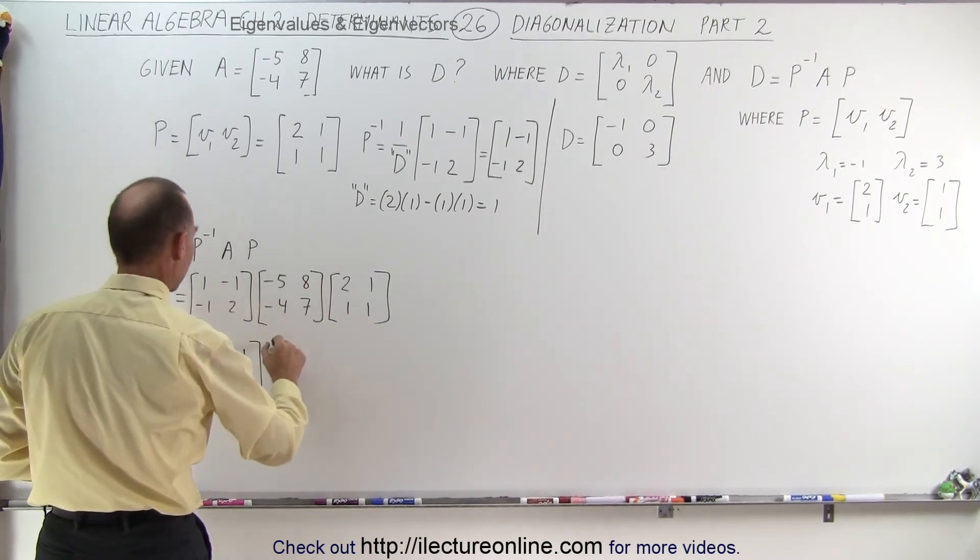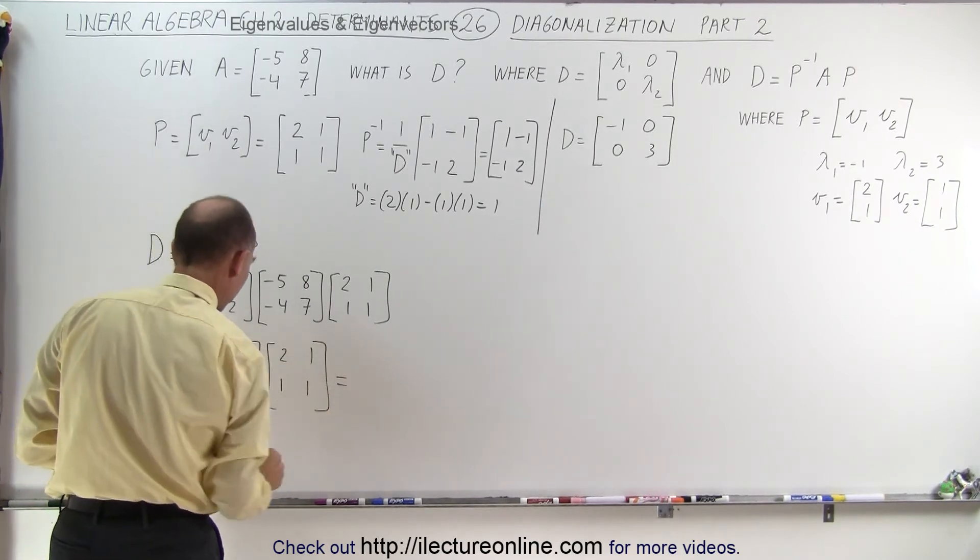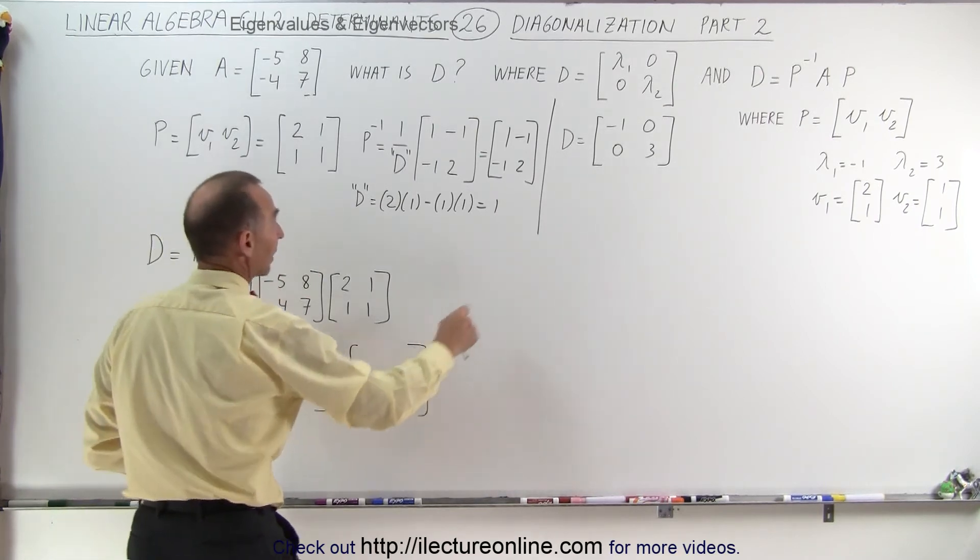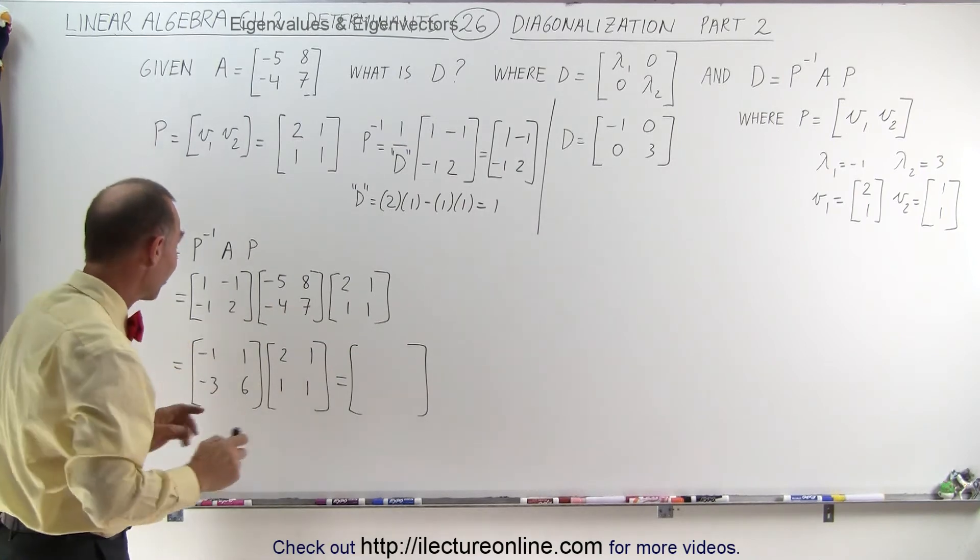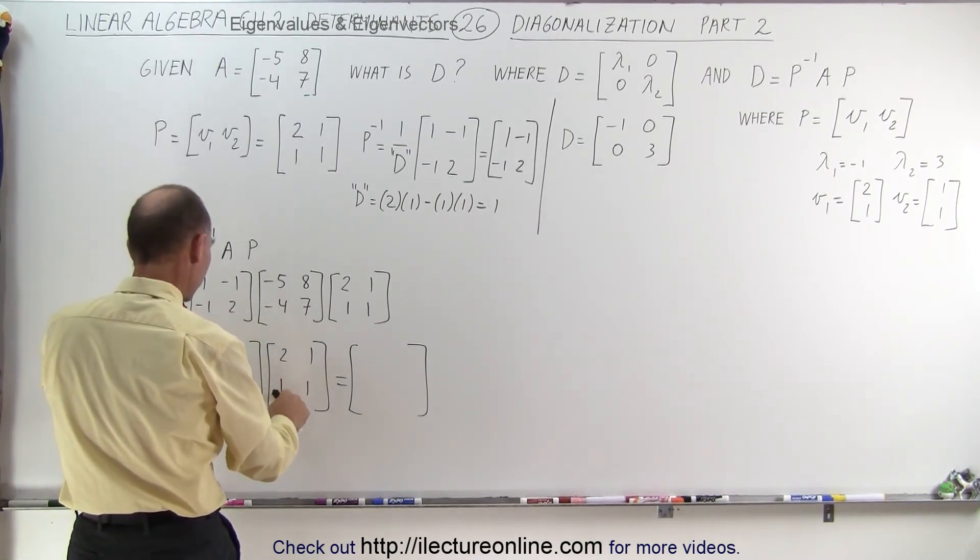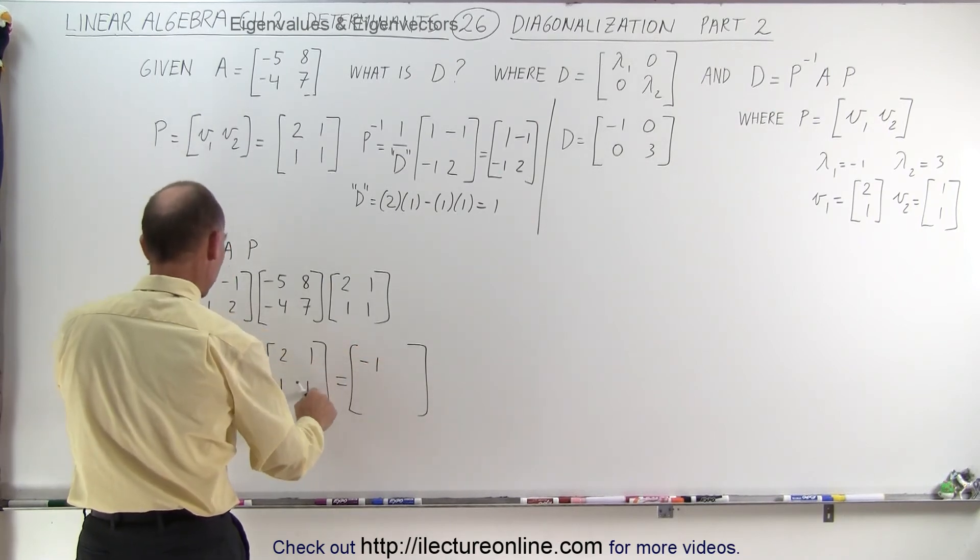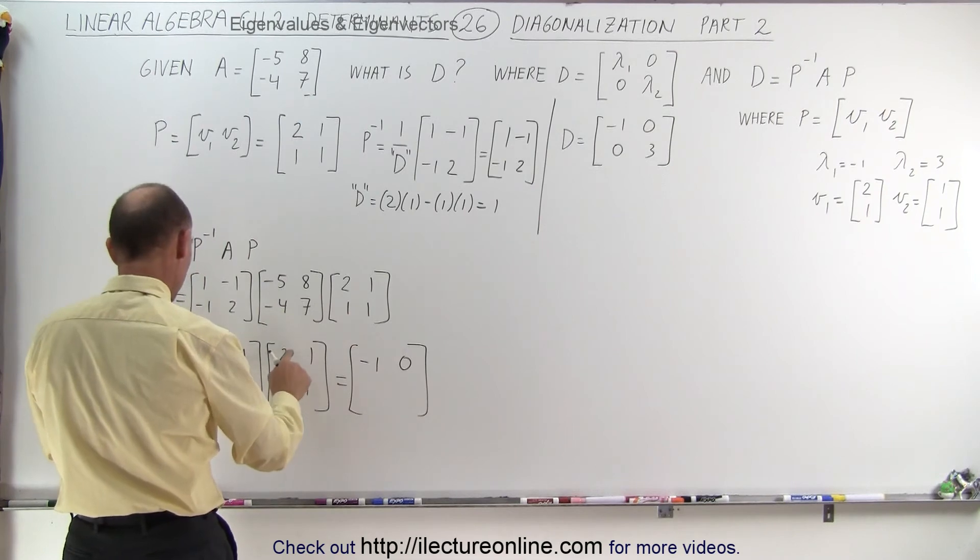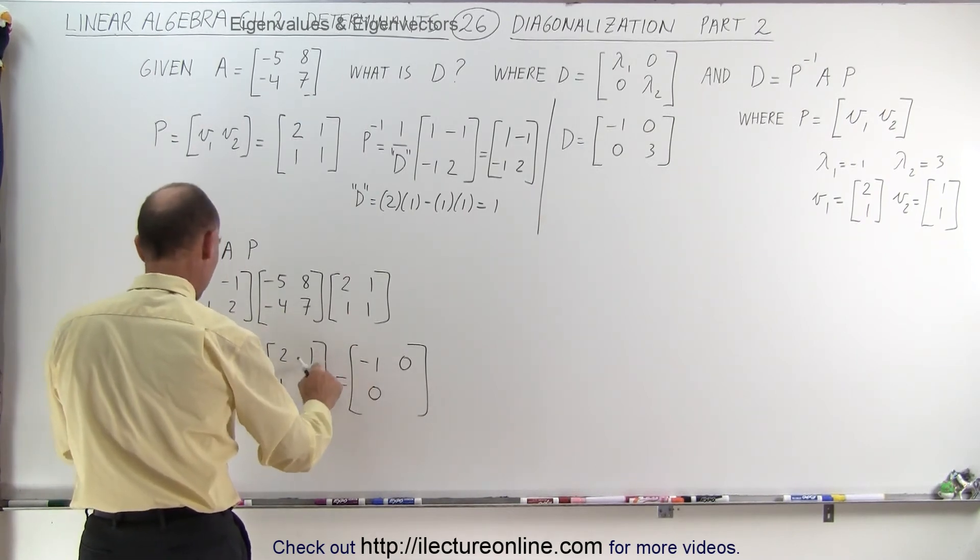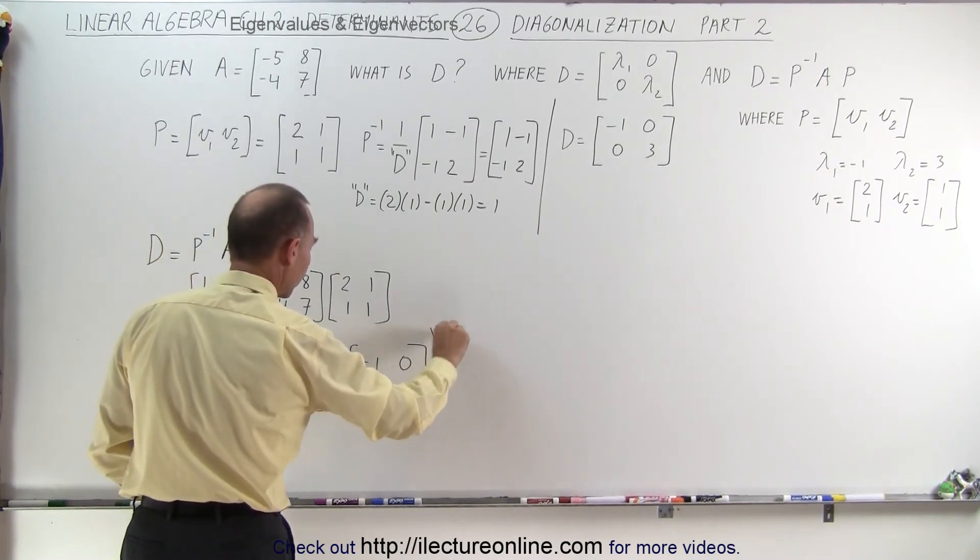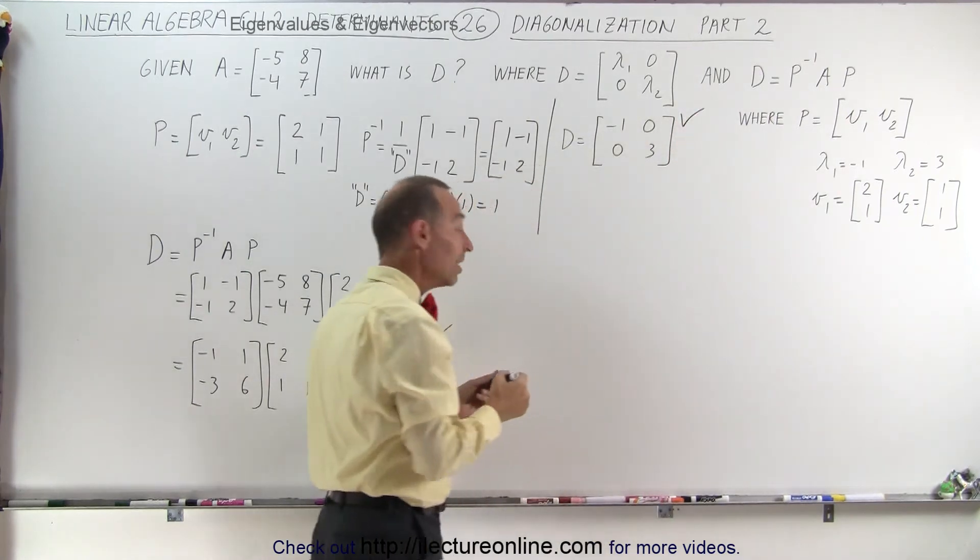So we multiply times the matrix 2, 1, 1 and 1. Let's see what we get here and this better equal the diagonalized matrix here. Doesn't look like it yet but let's find out. -2 plus 1 is -1. -1 plus 1 is 0. That's a good sign. -6 plus 6 is 0. And -3 plus 6 is a plus 3. And sure enough look at that. It is equal to our diagonalized matrix which is kind of neat.